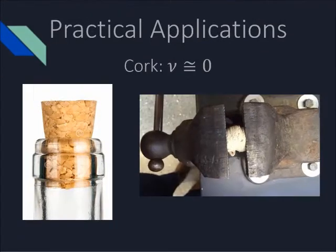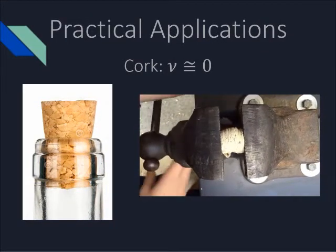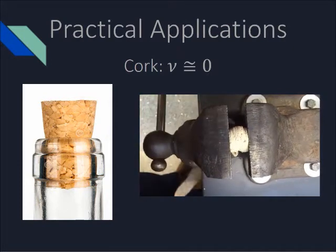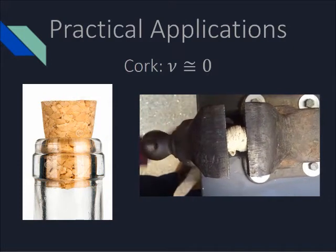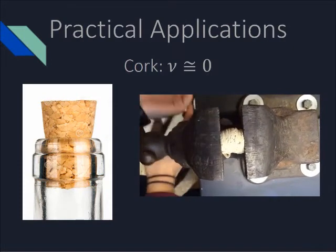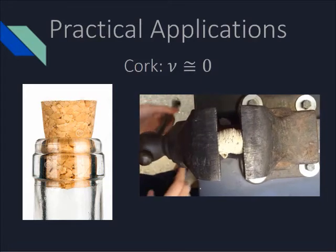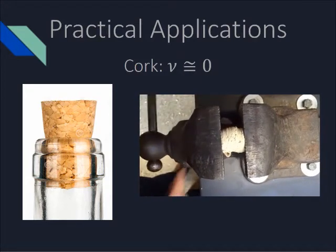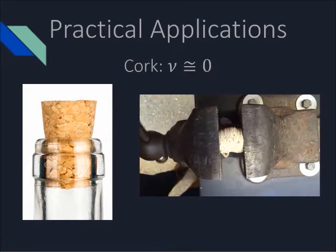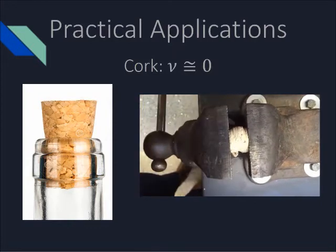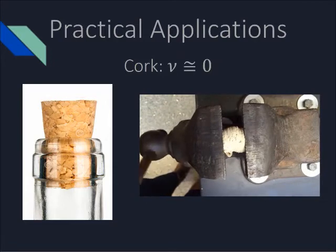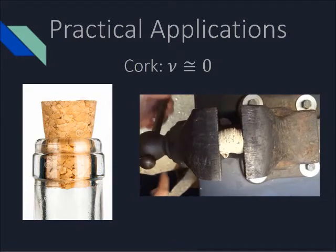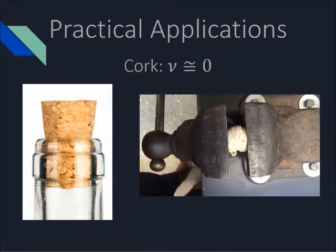One practical application of Poisson's ratio is a cork in a bottle, which must be easily inserted and removed while withstanding the pressure from within the bottle. A positive Poisson ratio material, such as rubber, with a Poisson's ratio of 0.5, could not be used for this purpose, because it would expand when compressed into the neck of the bottle and then jam. Cork, by contrast, with a Poisson's ratio of nearly zero, does not expand when compressed, and is thus ideal for this application.